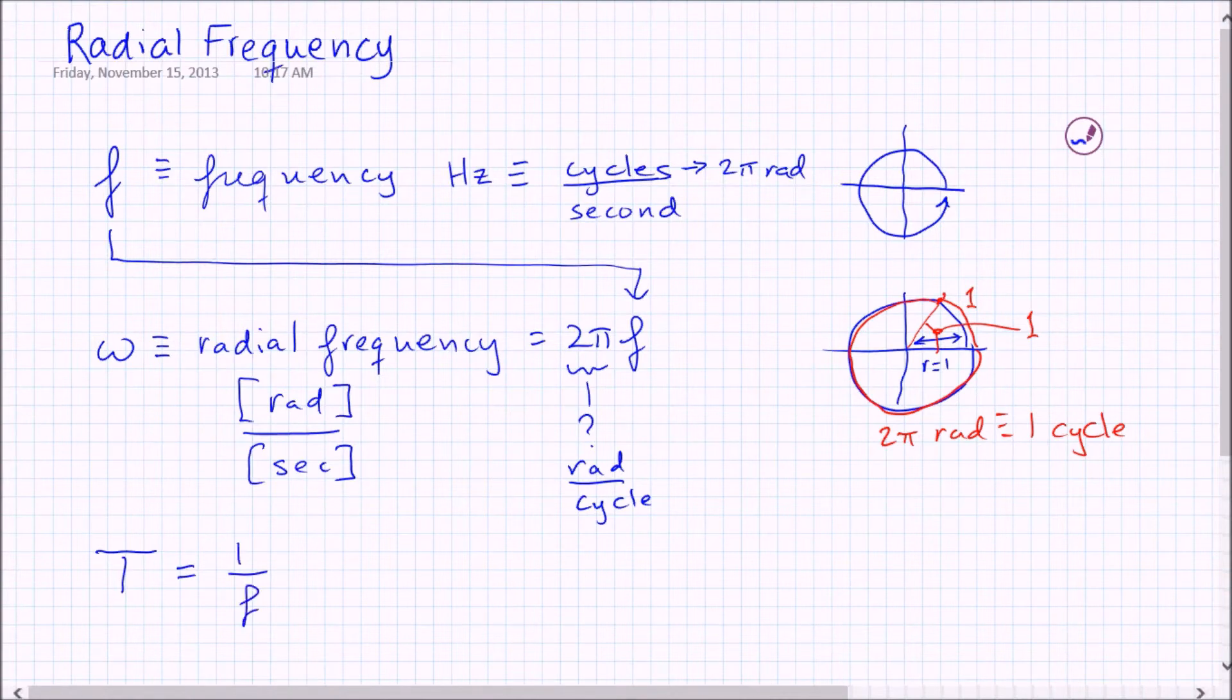But if we substitute in here that the frequency is equal to omega over two pi, then we get that two pi over omega is equal to the period. And that's something worth remembering. You don't want to have to redo this derivation every time. Just the period is two pi over omega.